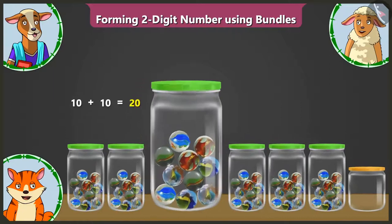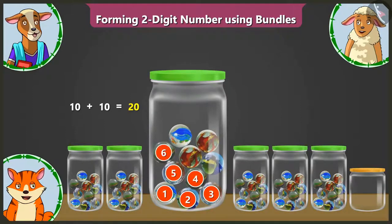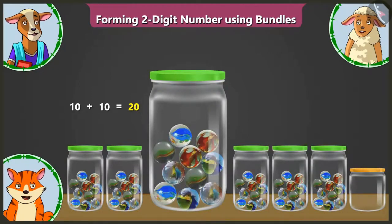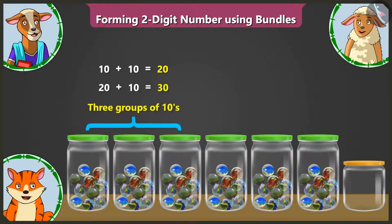Now look, here in the third jar, there are one, two, three, four, five, six, seven, eight, nine, and ten marbles. So this makes it ten and ten, twenty, twenty and ten, thirty — three groups of tens.